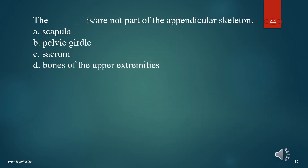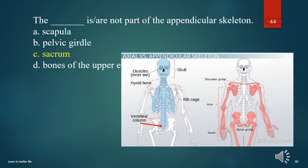The what is not part of the appendicular skeleton? A. Scapula. B. Pelvic girdle. C. Sacrum. D. Bones of the upper extremities. The answer is C. Sacrum.